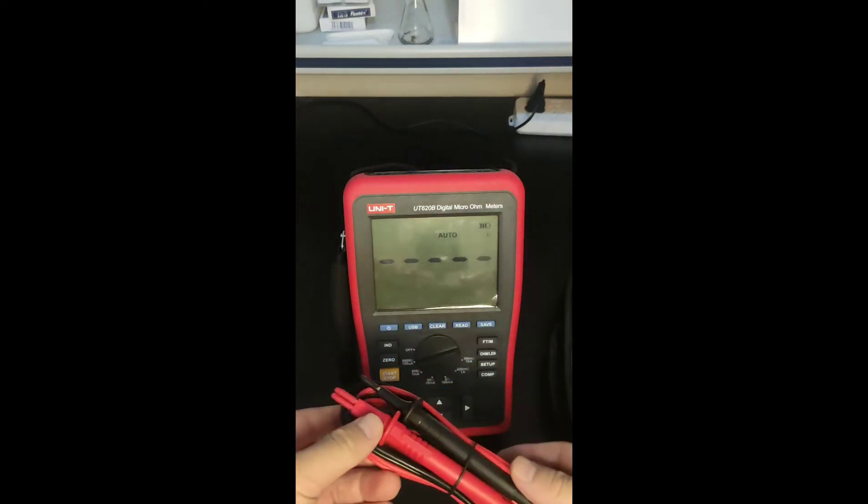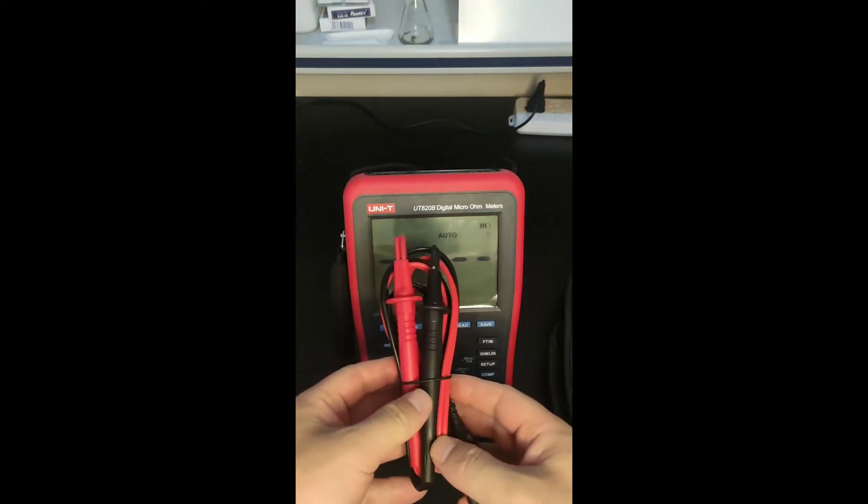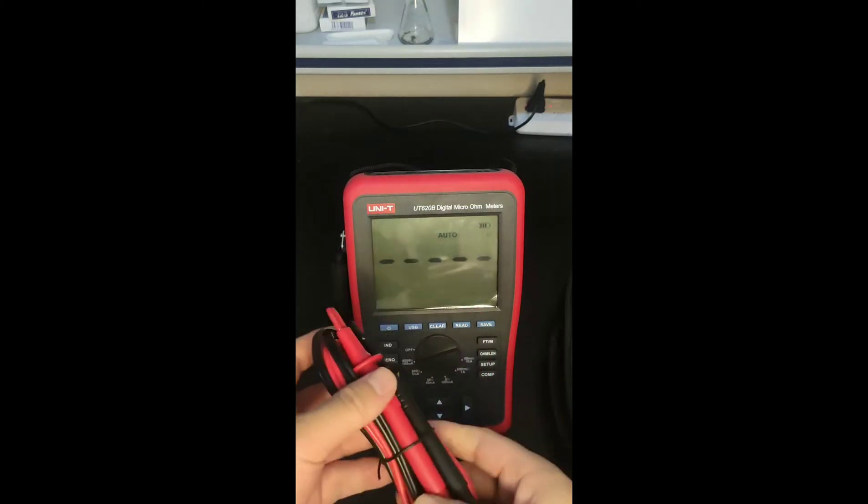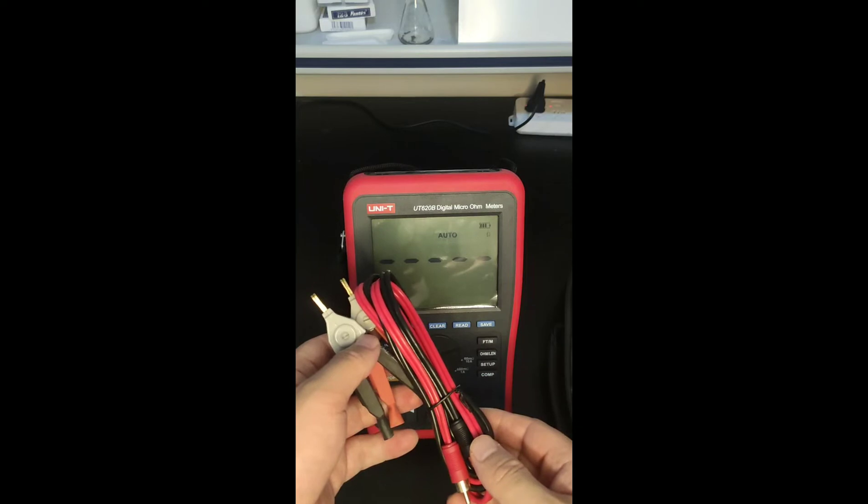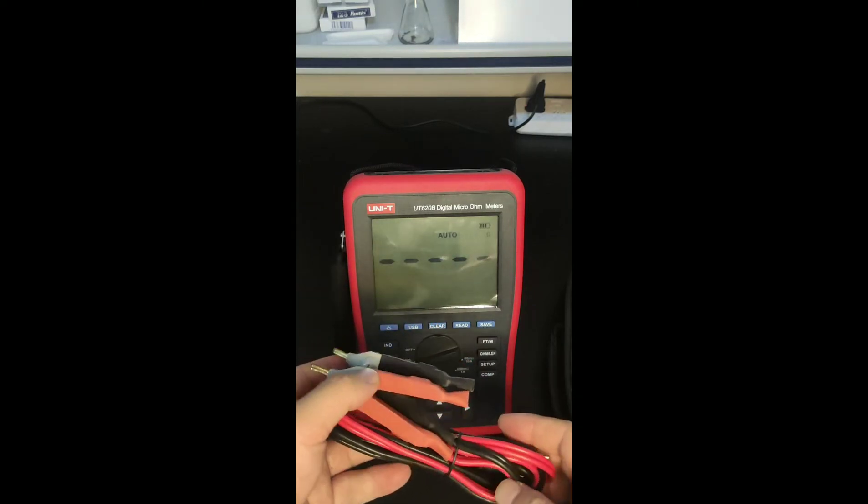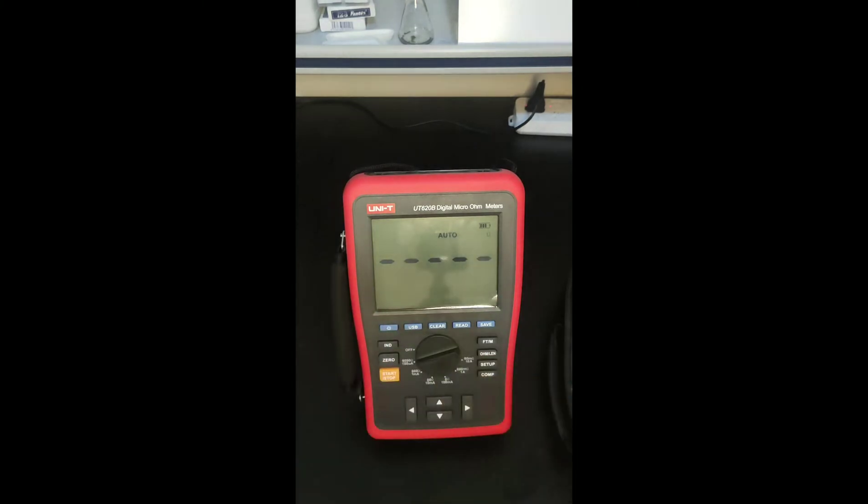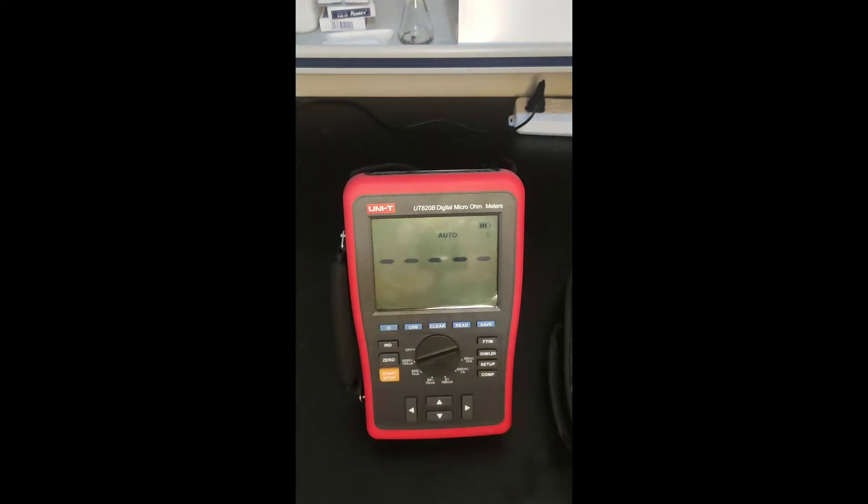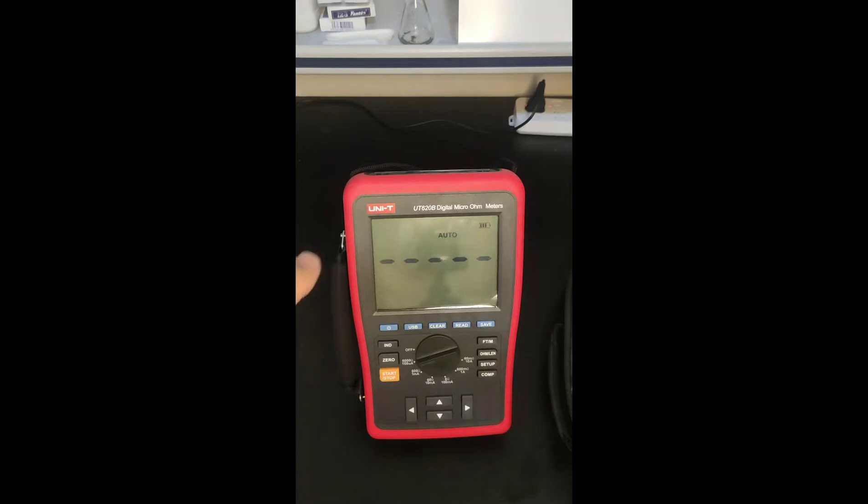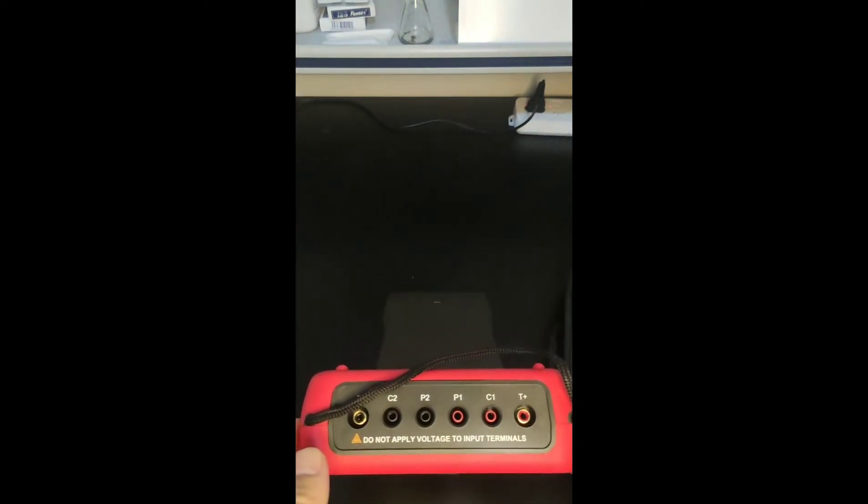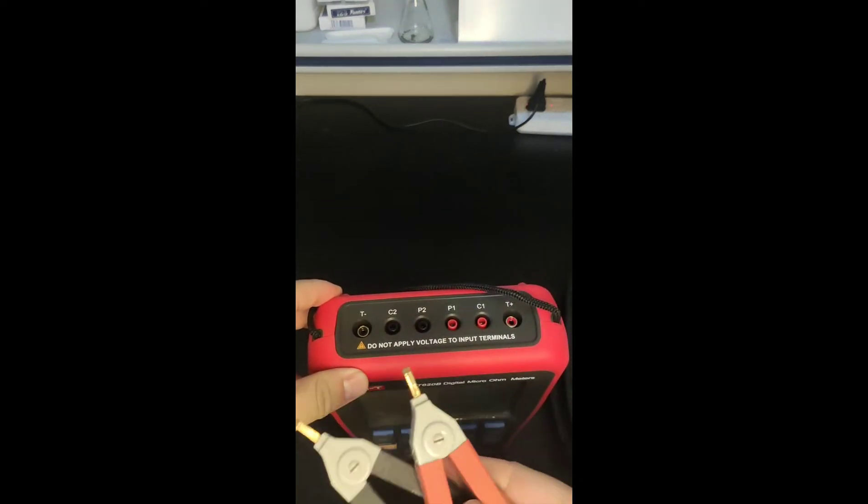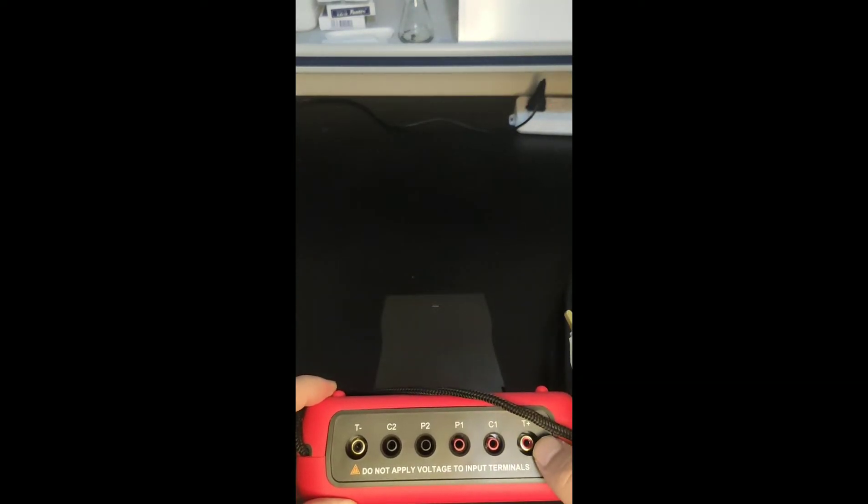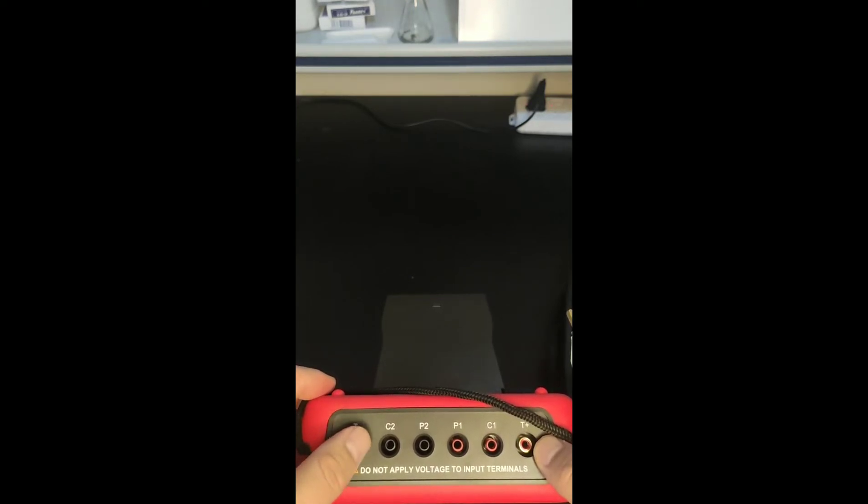And come together with the machine, there is two cables. So this one is the four wire tester cable. And this one is the standard Kelvin clips. Kelvin clips. Now we just use this Kelvin clip to do the test. On the top of the machine, there are some of the ports to connect the cable. Now we have this Kelvin clip. The Kelvin clip. The red one will connect it to T+. And the black cable will connect it to T-.